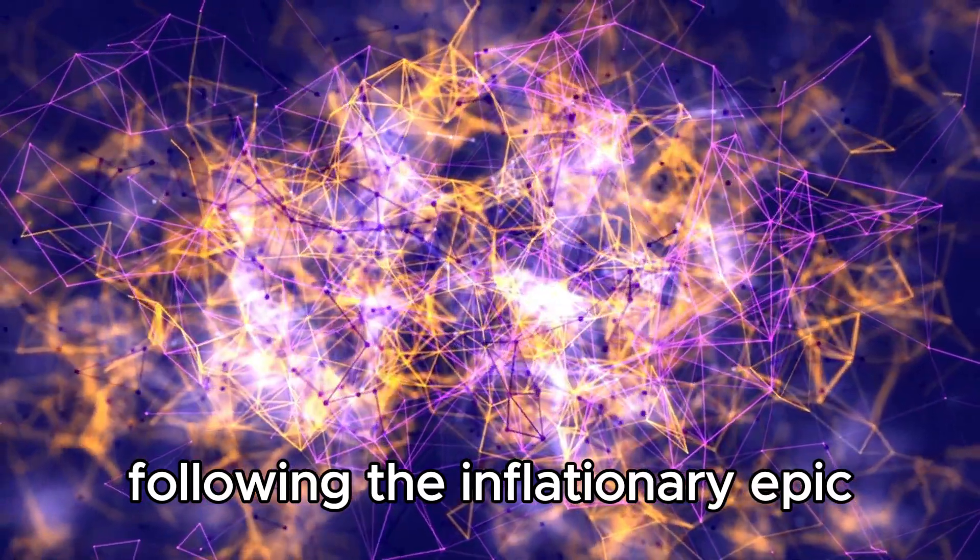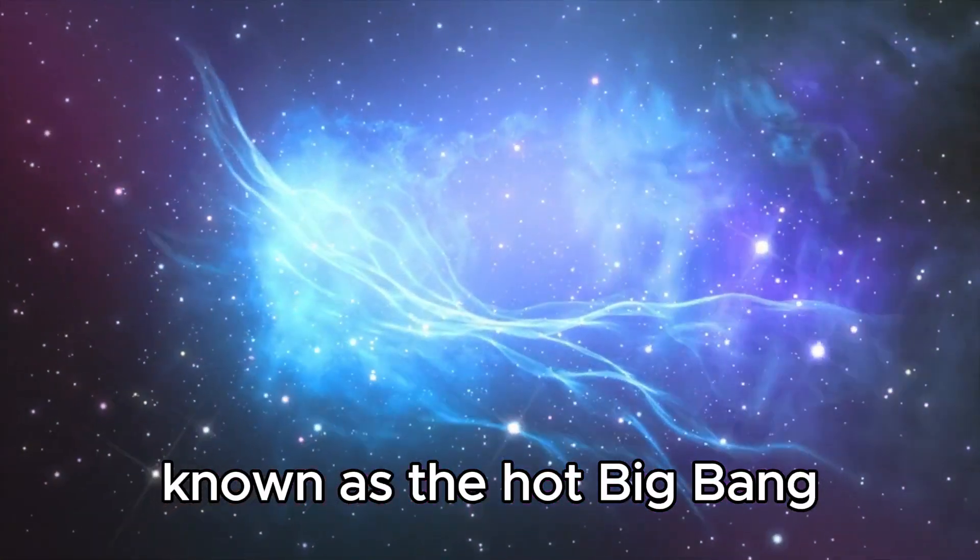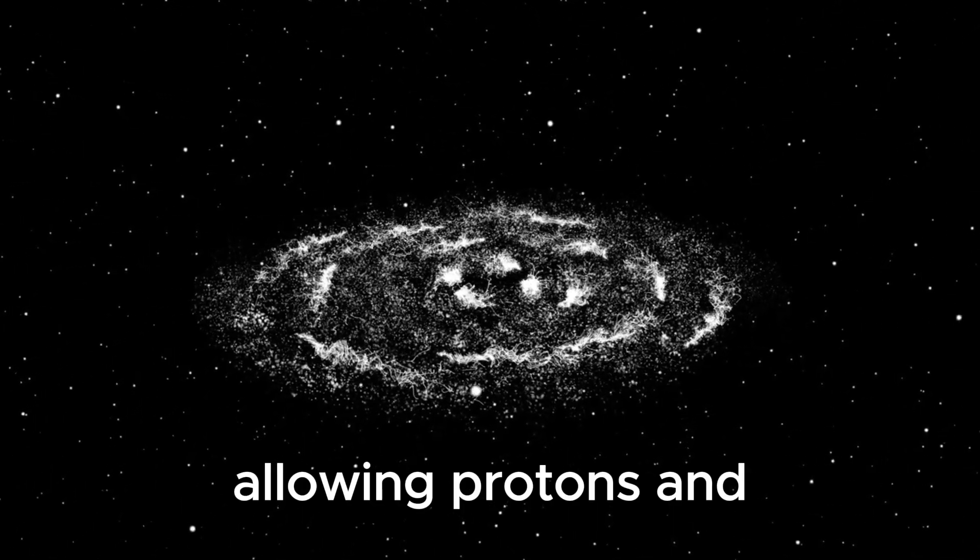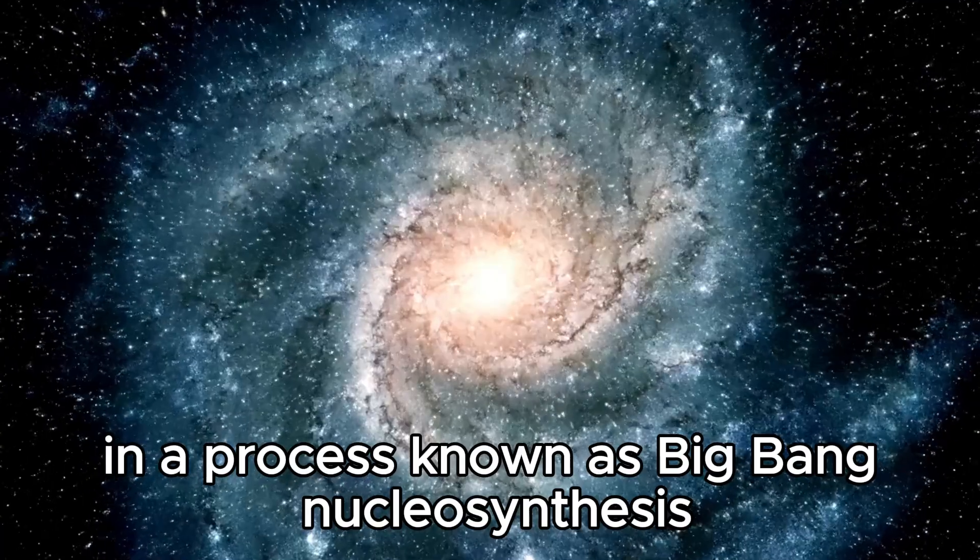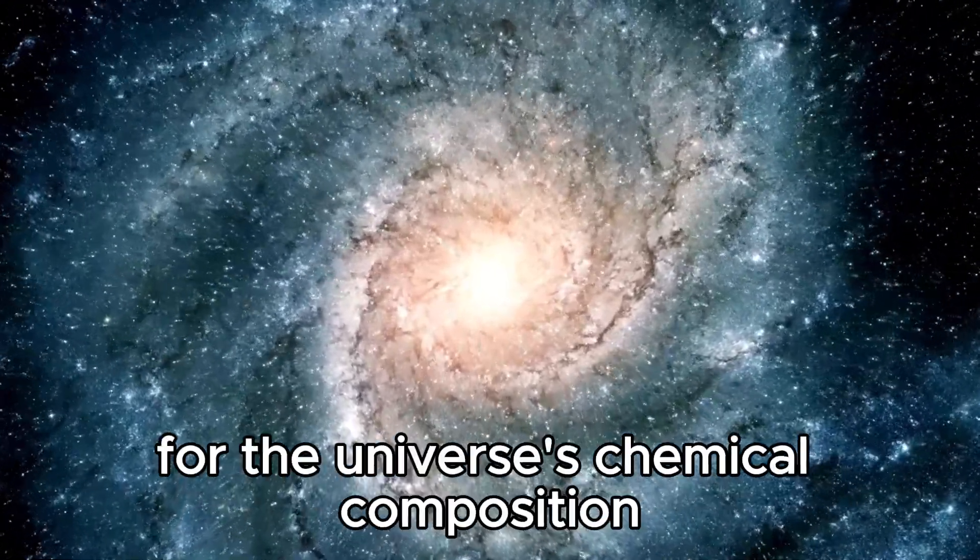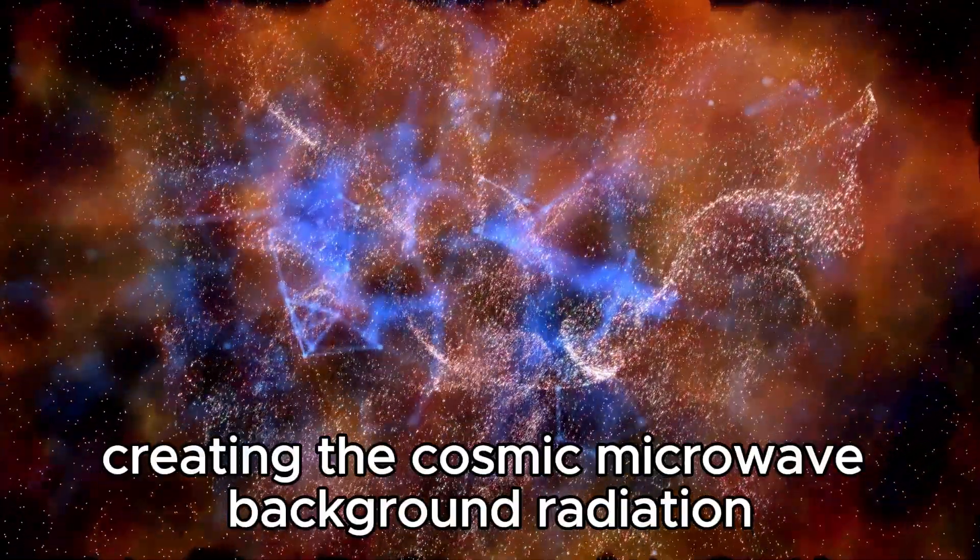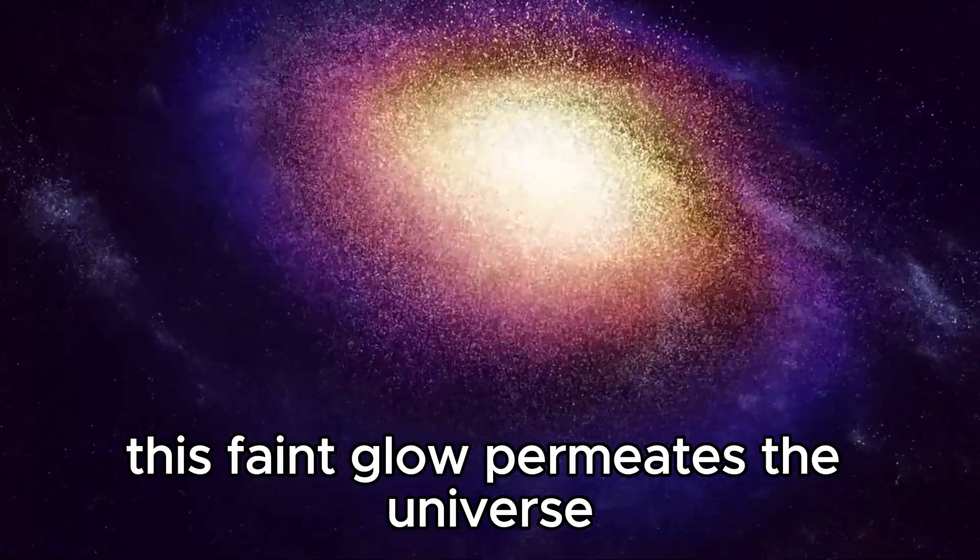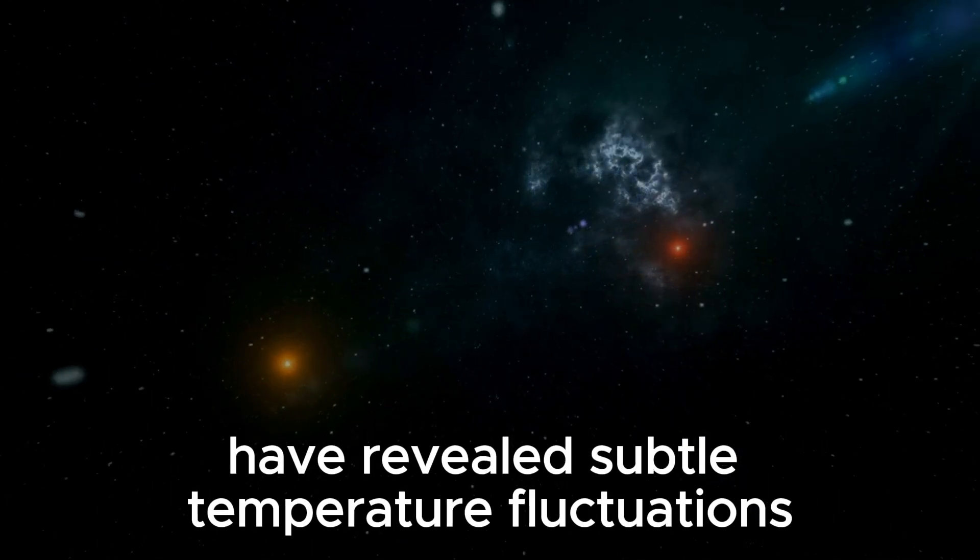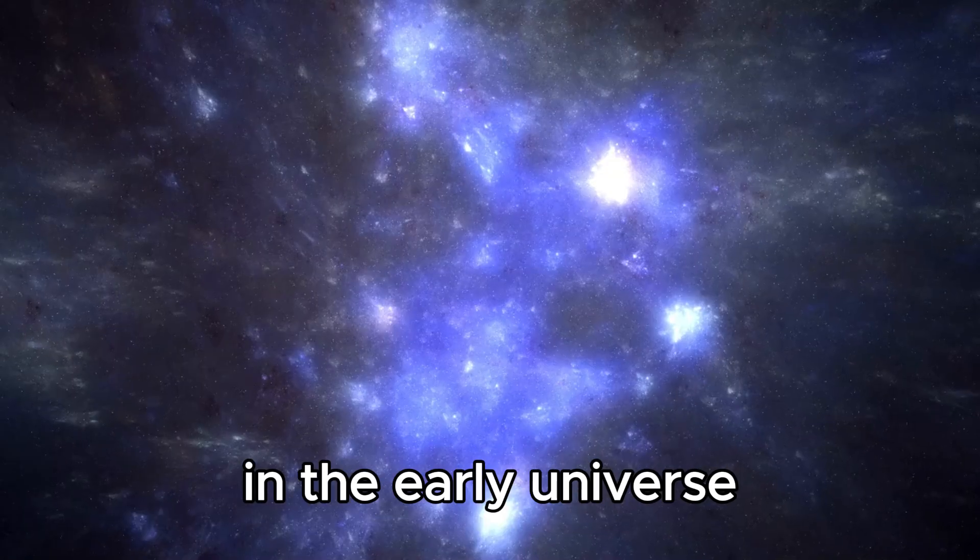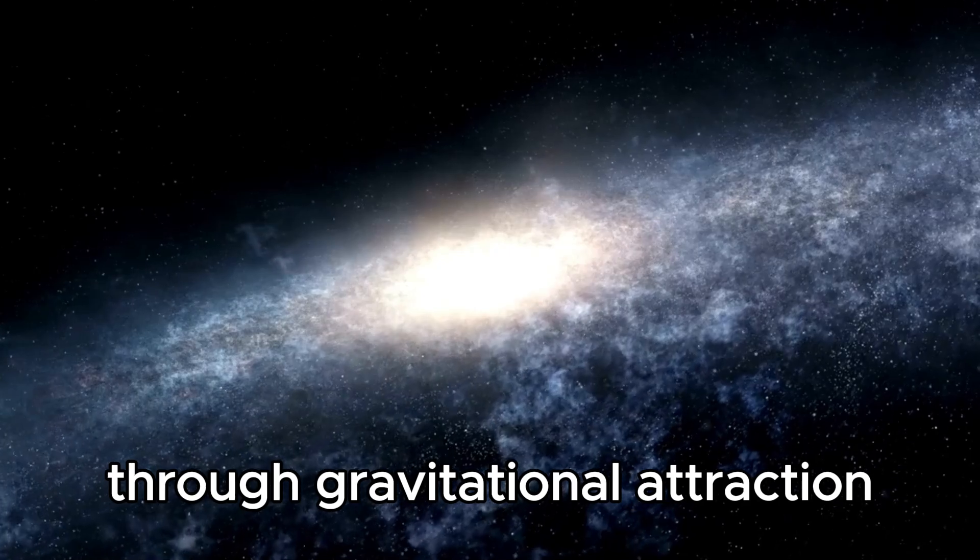Following the inflationary epoch, the universe entered a phase dominated by the interaction of elementary particles and radiation. This era, known as the Hot Big Bang, saw the universe cool and expand further, allowing protons and neutrons to form within the first few minutes. These nucleons eventually combined to form the first atomic nuclei in a process known as Big Bang nucleosynthesis. As the universe continued to expand and cool, photons decoupled from matter, creating the cosmic microwave background radiation. Measurements of the CMB have revealed subtle temperature fluctuations, which correspond to density variations in the early universe. These fluctuations serve as the seeds from which galaxies and larger cosmic structures emerged through gravitational attraction over billions of years.